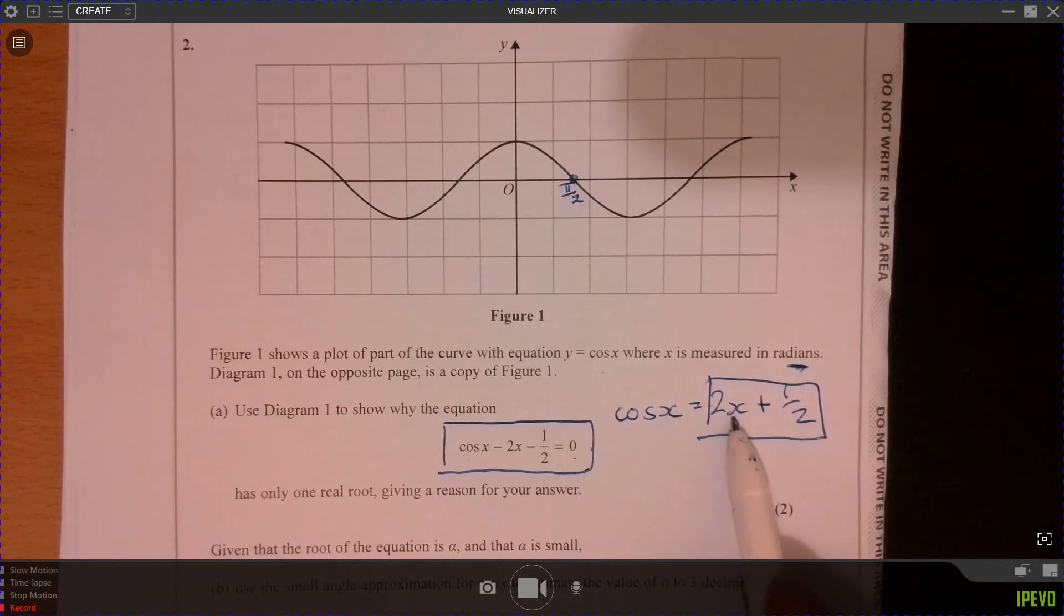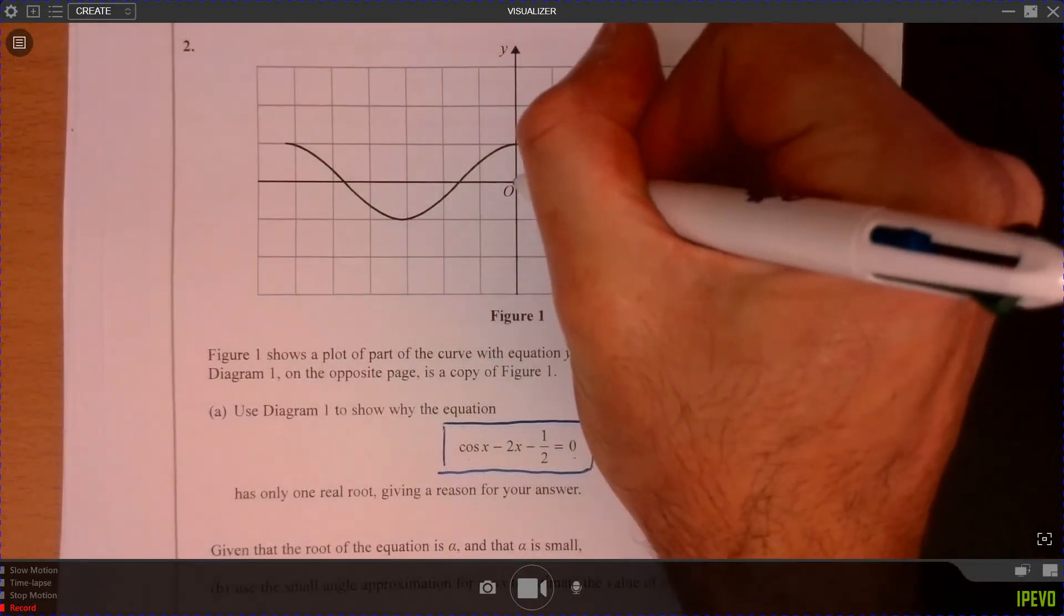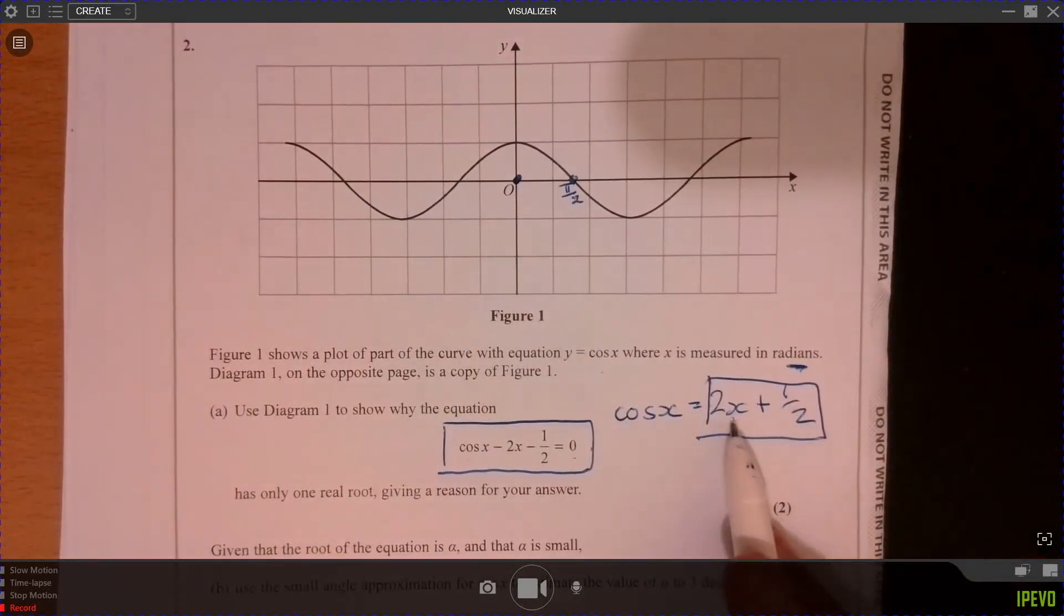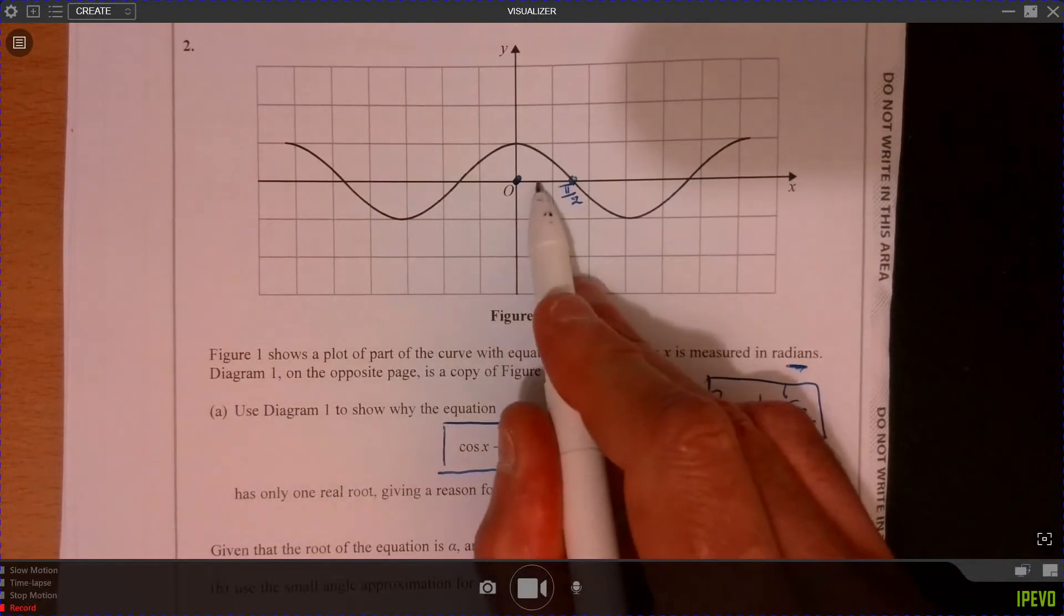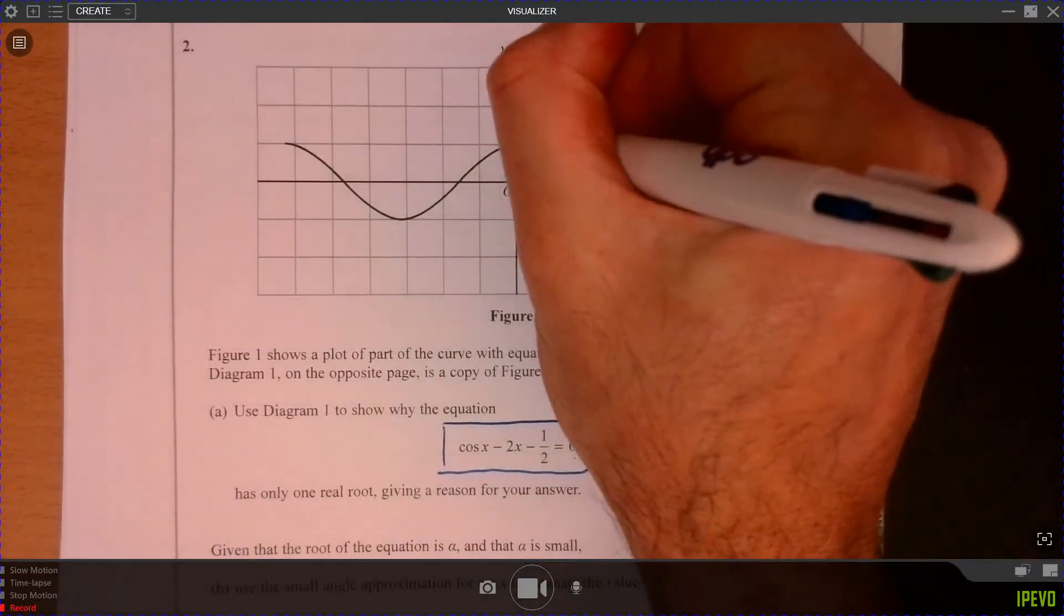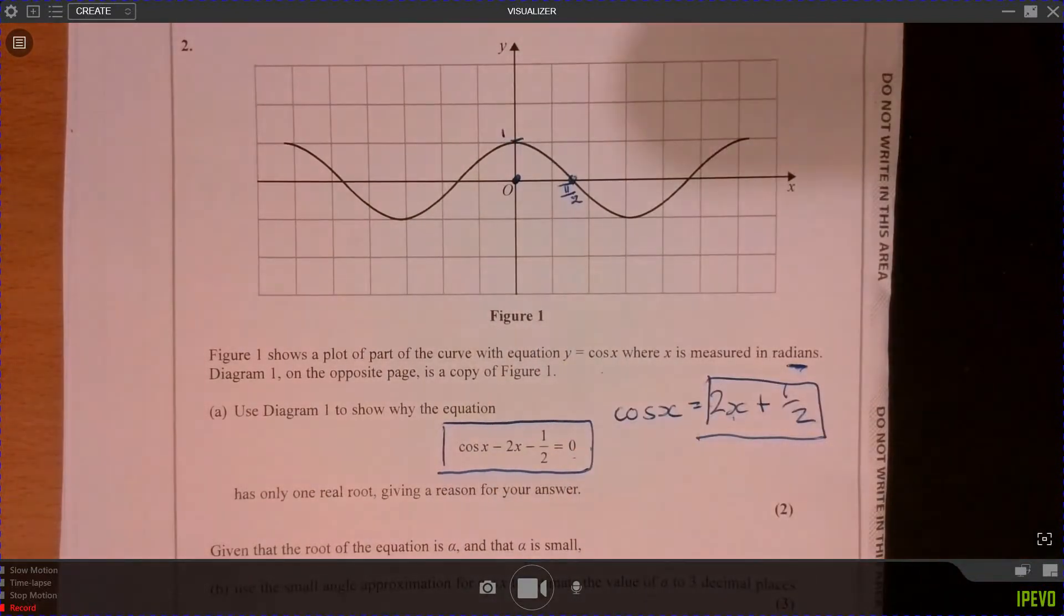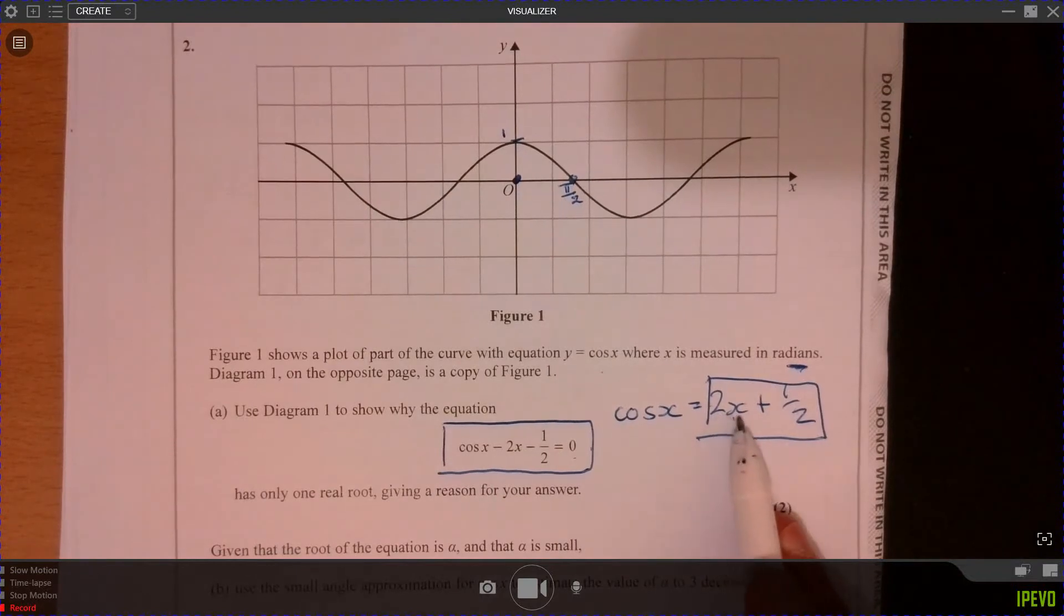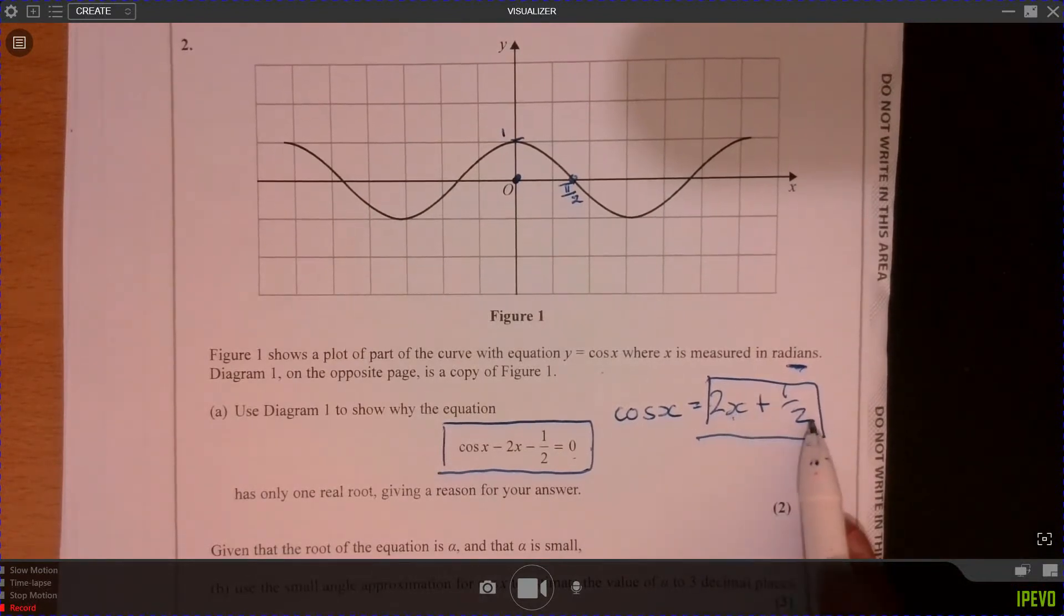Well, when x is zero, that would give us zero. You could plug in a couple of different values. You could say when x is 1, when x is 1, it's about there. Remember this value here going across the top is just 1. So that'd be 2 plus half. That's going to be 2 and a half.